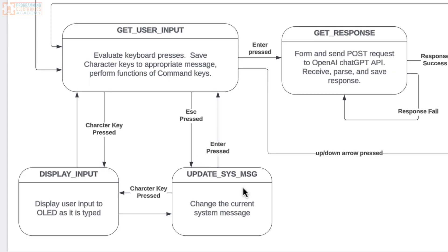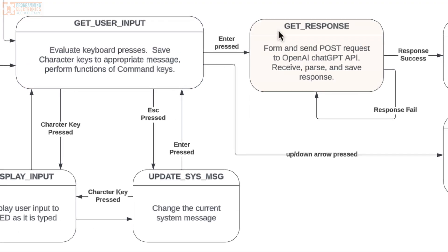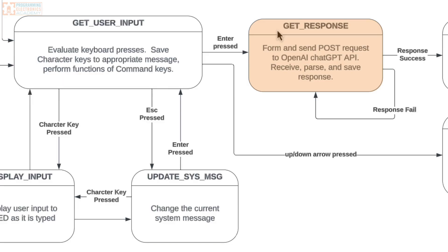If you're in the 'update system message' state and press enter, that takes you back to 'get user input.' If you're in the 'get user input' state and press enter, it takes you to 'get response.' So the same key mapping performs different actions based on what state you're in. For example, if you've typed a message to ChatGPT like 'which side should I butter my bread' and press enter, that takes you to the 'get response' state.